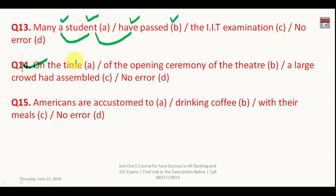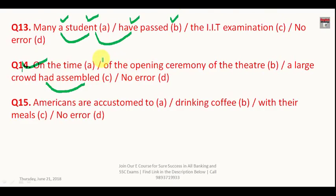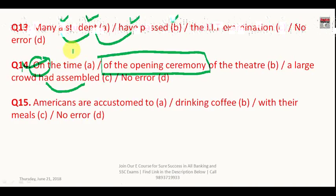Question number fourteen: 'On the time of the opening ceremony of the theater a large crowd had assembled.' 'Had assembled' is correct as it is followed by the third form. However, since you are referring to a particular point in time — the opening ceremony — you must use 'at' instead of 'on.' The correct phrase is 'At the time of the opening ceremony.' The answer is A.